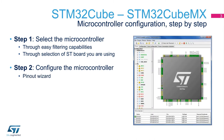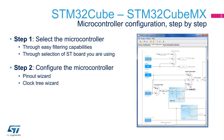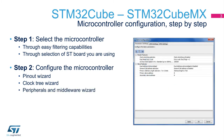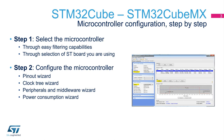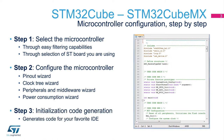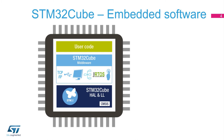The pinout wizard solves conflicts and helps the user to clearly identify how the package pins will be used. The clock tree wizard provides a clear interface to select the right compromises in terms of the internal frequencies used. The peripherals and middleware wizard allows the user to set all the parameters, for instance from the simple I2C cell configuration up to USB stack settings. The power consumption wizard enables the user to check if the application fits a particular power consumption scenario. Once the user is satisfied with the configuration, code can be generated based on these choices. Some project files for the user's favorite IDE are created, making it ready to append the user code in the development environment.